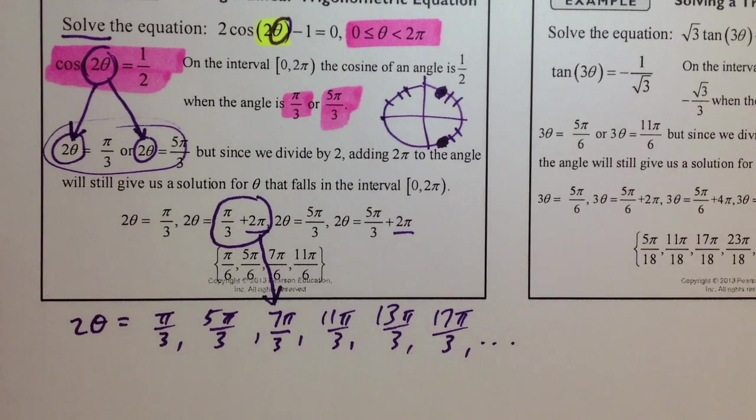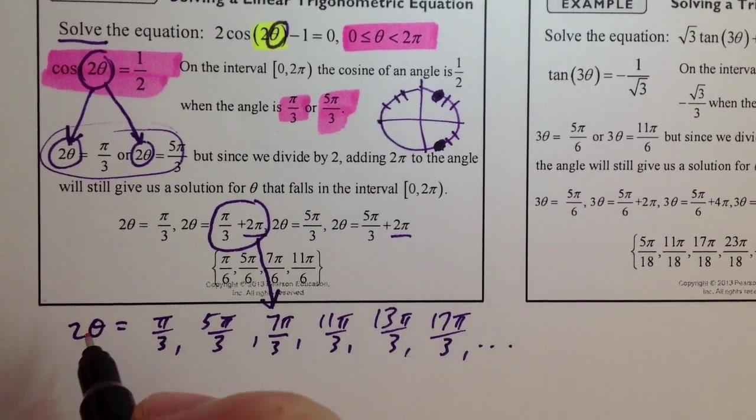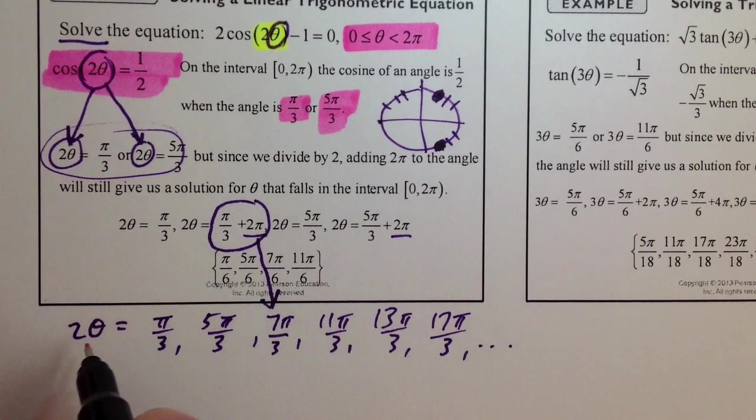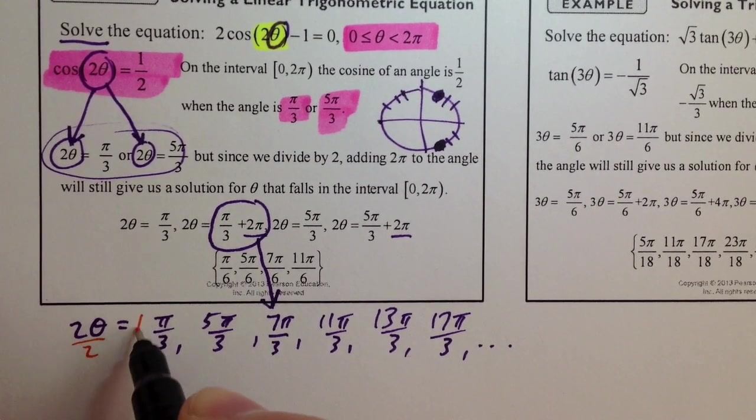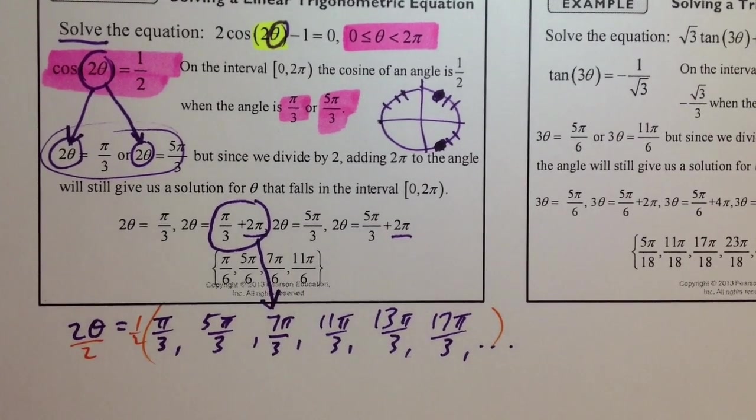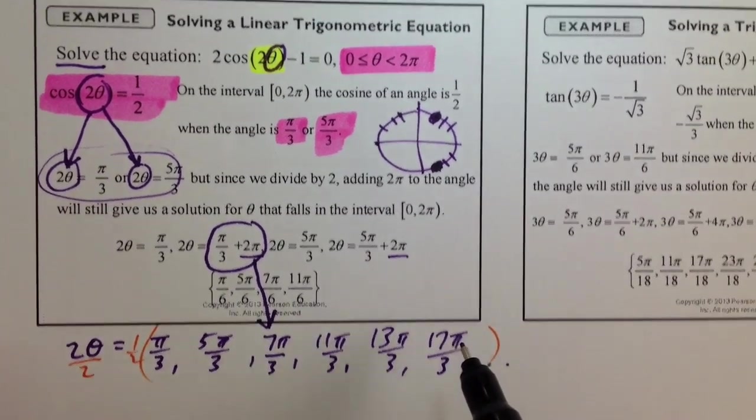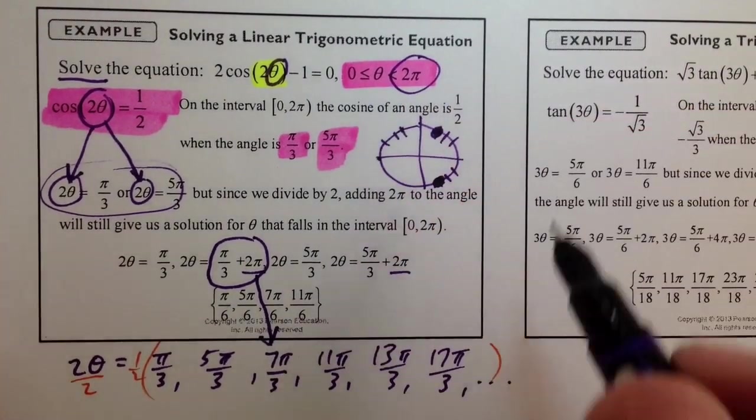But, again, you've seen this part. We have 2 theta equaling all these angles. And we're going to divide by 2, or we can think of this as multiplying every one of these angle measures by 1 half.